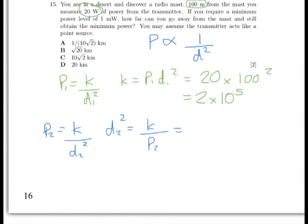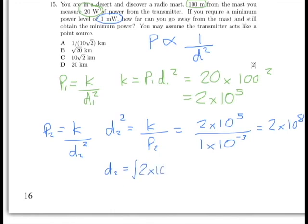We know that that constant is 2 times 10 to the power of 5. We know that P2 is our new power here, which is 1 milliwatt, so 1 times 10 to the minus 3, which will give you 2 times 10 to the 8, as D2 squared.